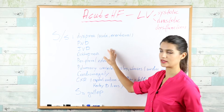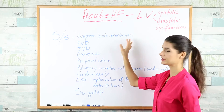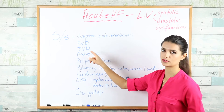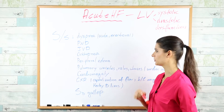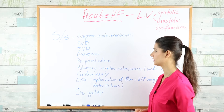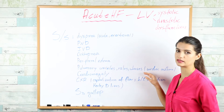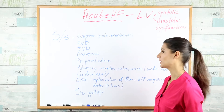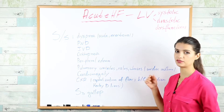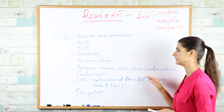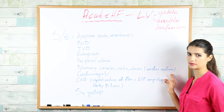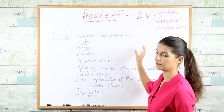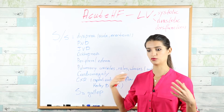The patient can present with dyspnea — acute or exertional — paroxysmal nocturnal dyspnea, JVD (jugular venous distension), orthopnea, peripheral edema, pulmonary crackles, rales, and wheezes. Because heart failure causes the wheezes here, we call these symptoms 'cardiac asthma.' You can also see cardiomegaly due to the dilated left ventricle making the heart look bigger.